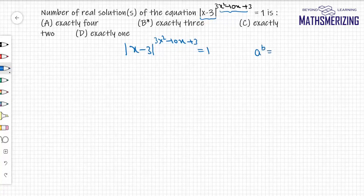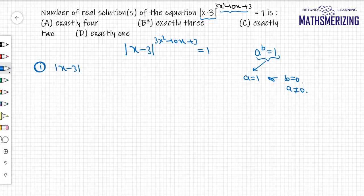For any equation of the form a^b = 1, either a = 1 or b = 0 and a ≠ 0. Case 1: |x-3| = 1.